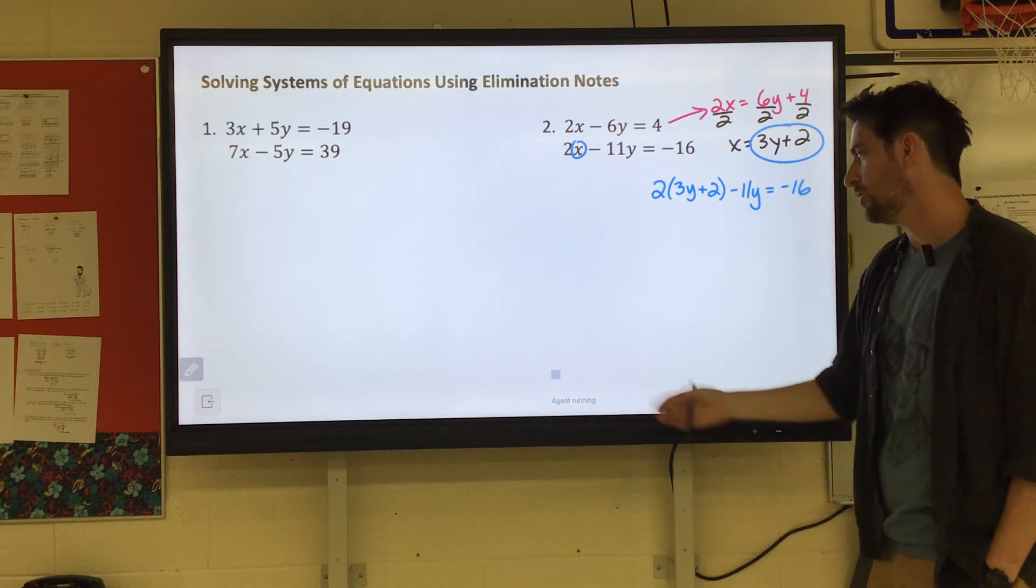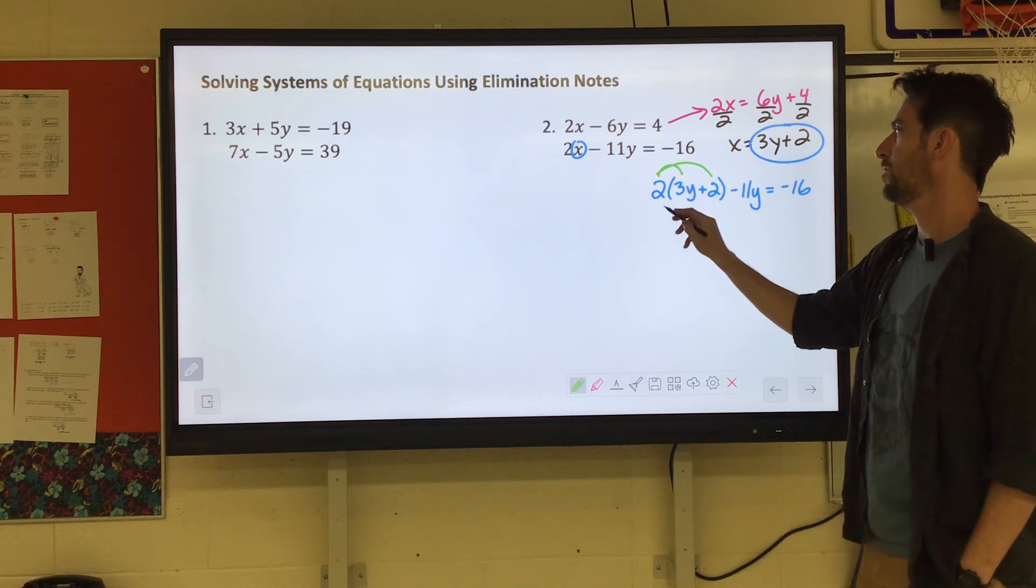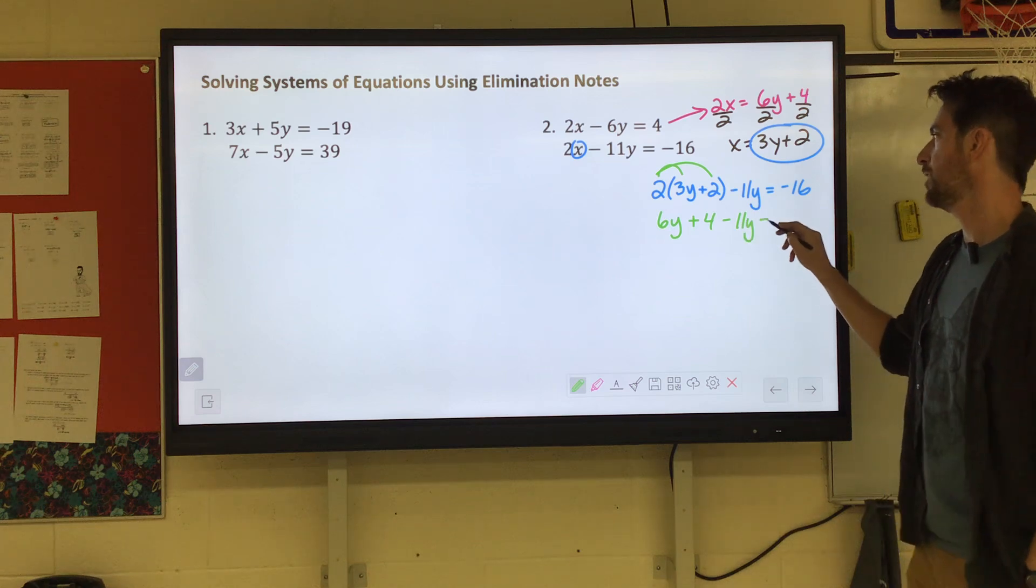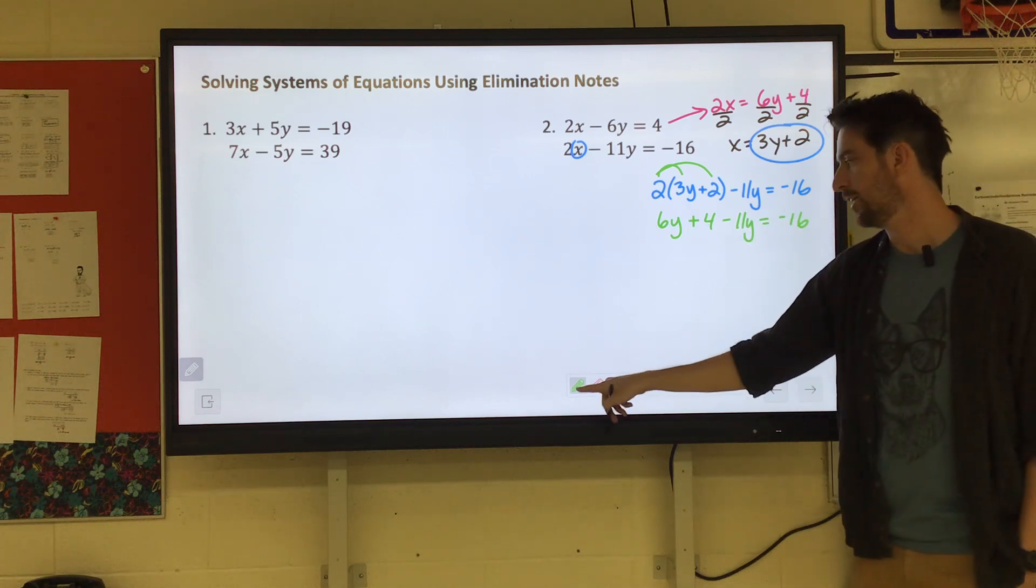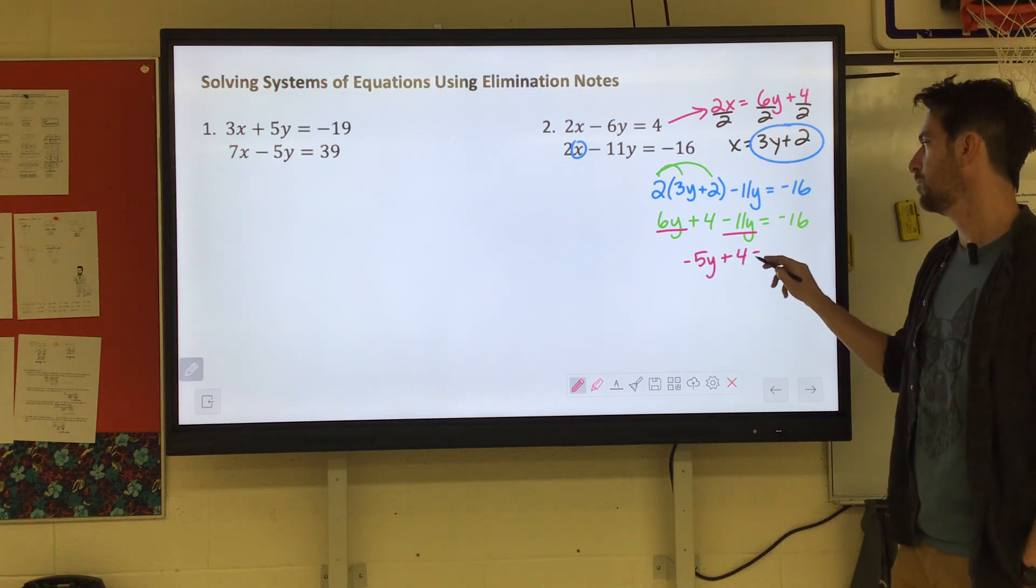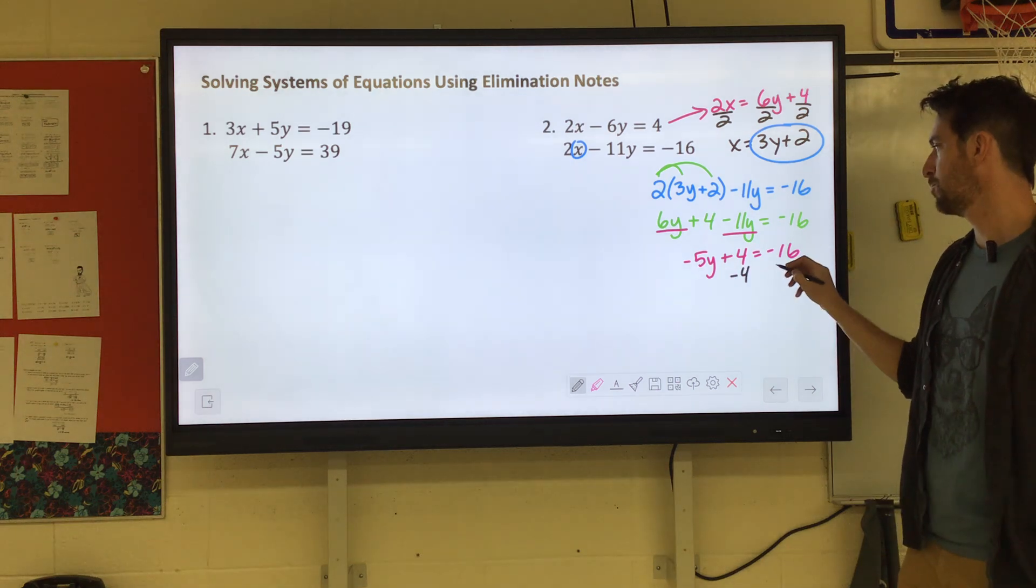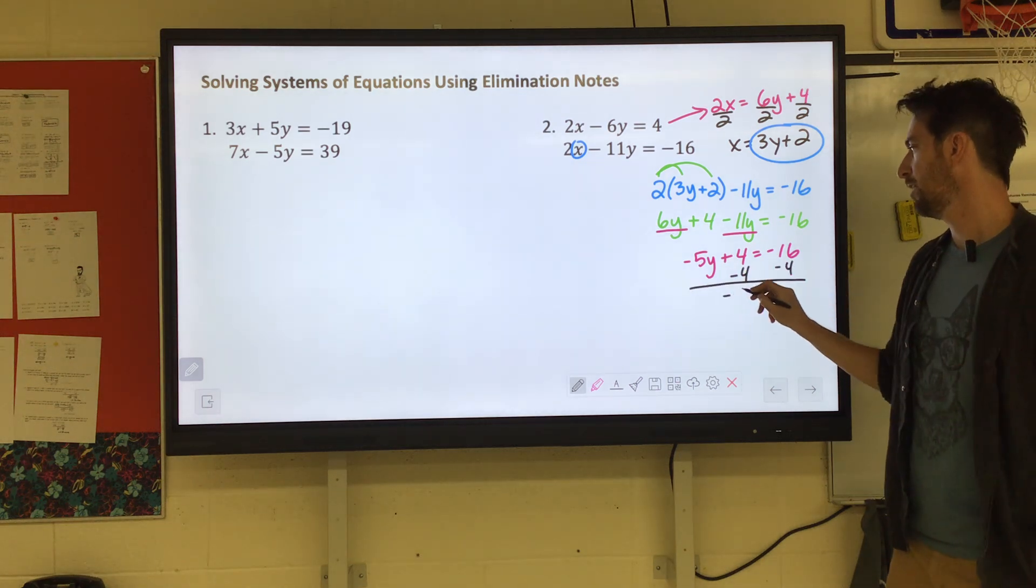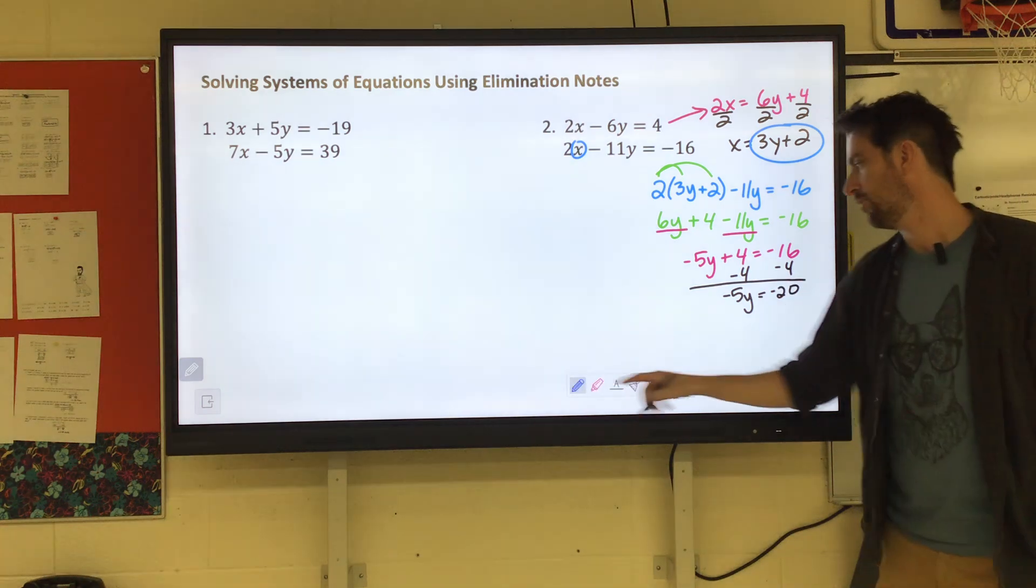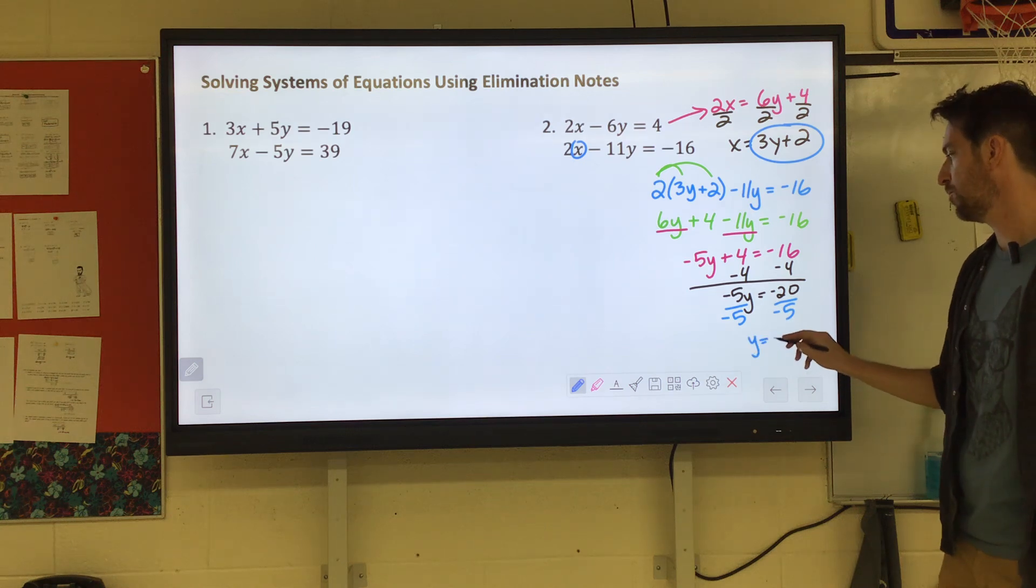We start distributing that would give us 6Y plus 4 minus 11Y equals negative 16. You combine your like terms that would give us negative 5Y plus 4 equals negative 16. You're like oh Mr. Plant we should probably subtract the 4. Negative 5Y equals negative 20. Divide it by negative 5 and you get Y equals positive 4.